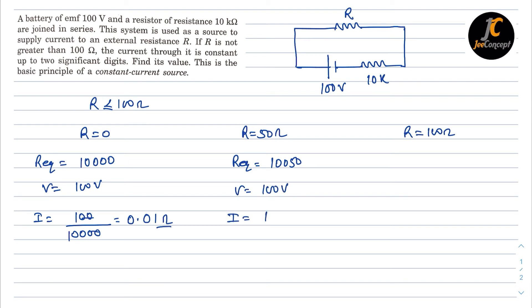So I will be 100 upon 10,050. So this will become 0.0099.